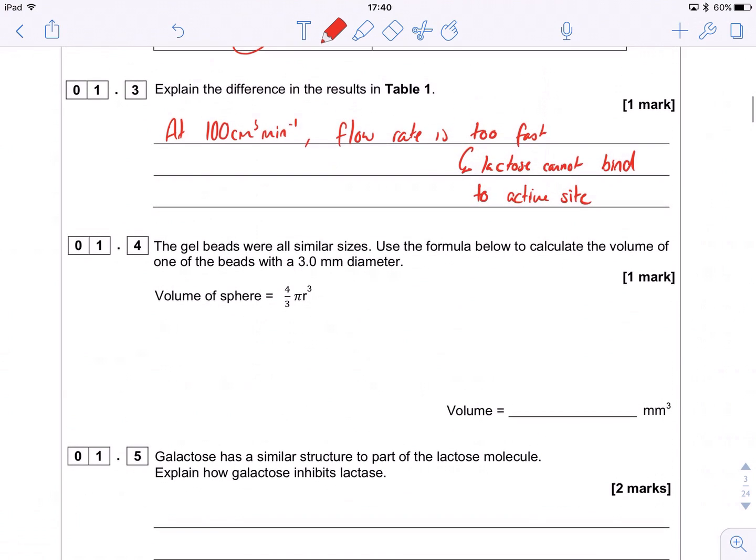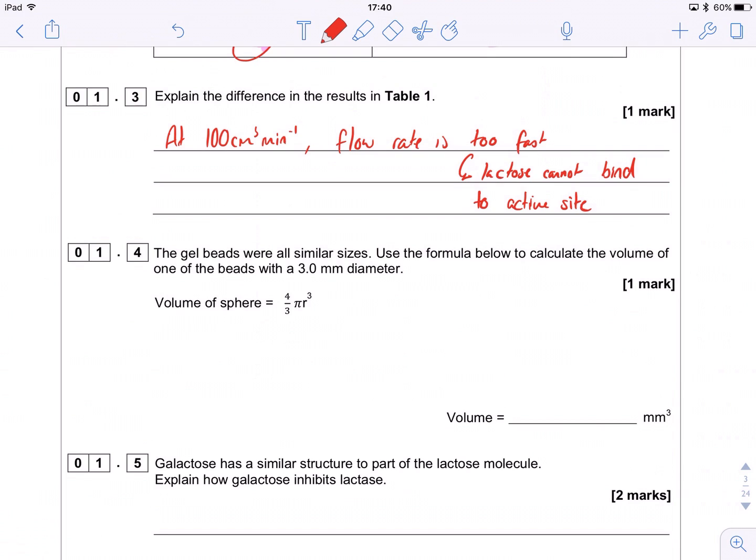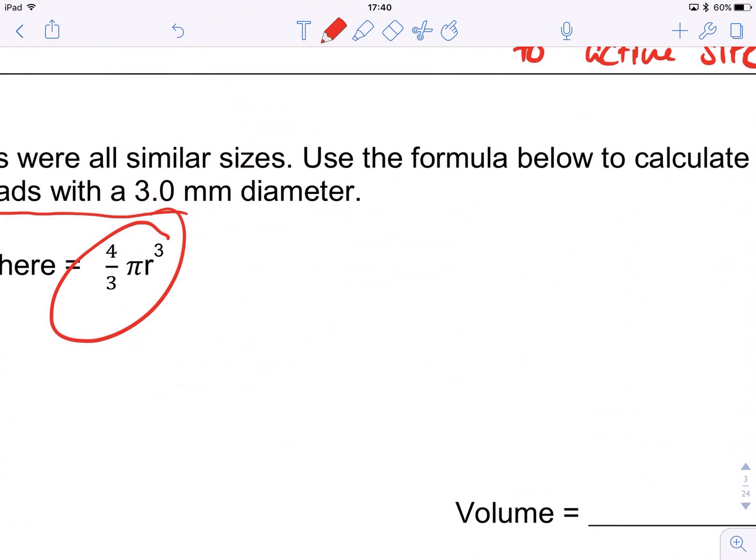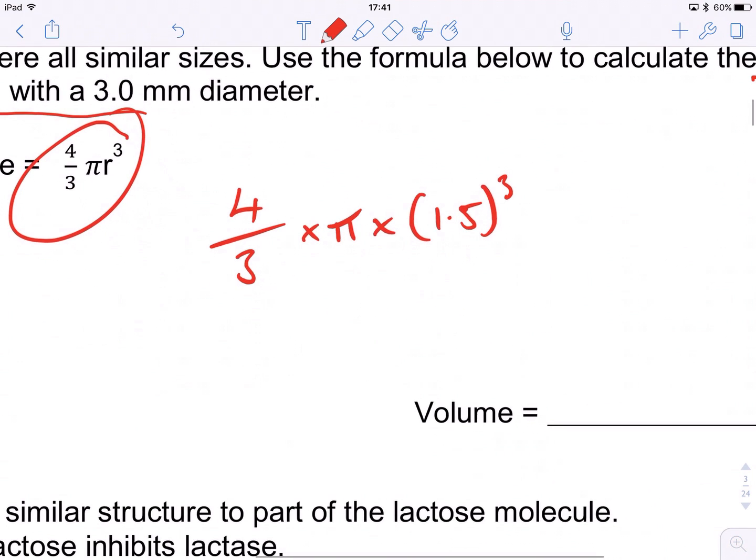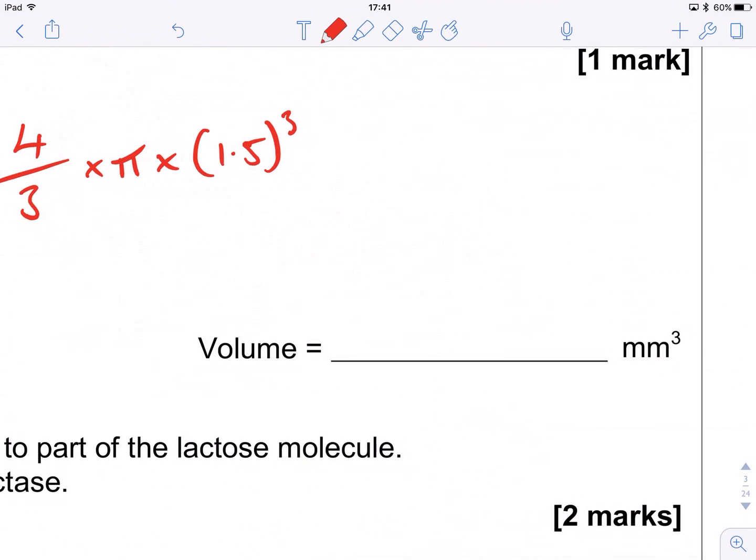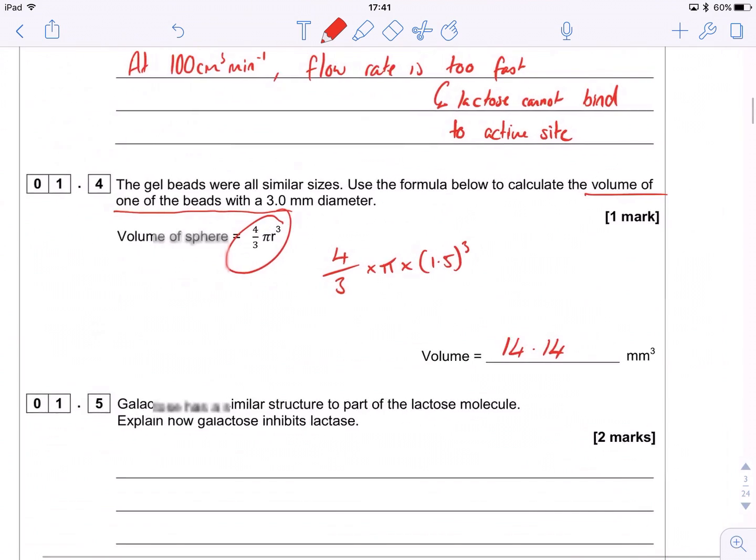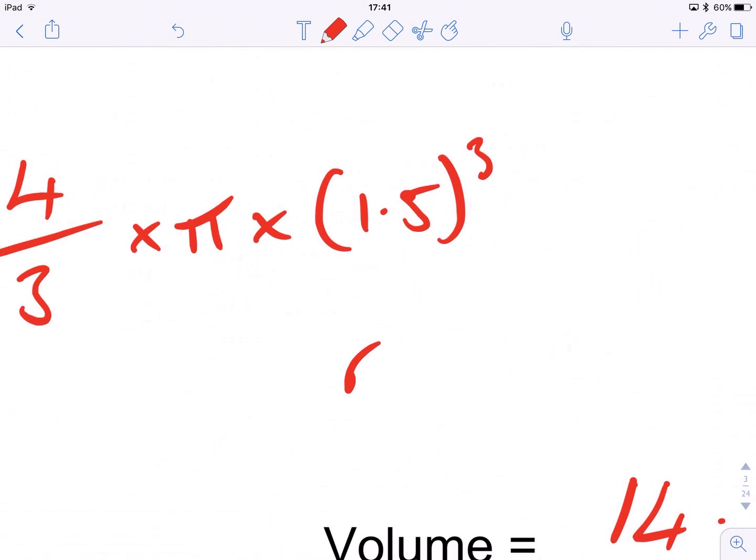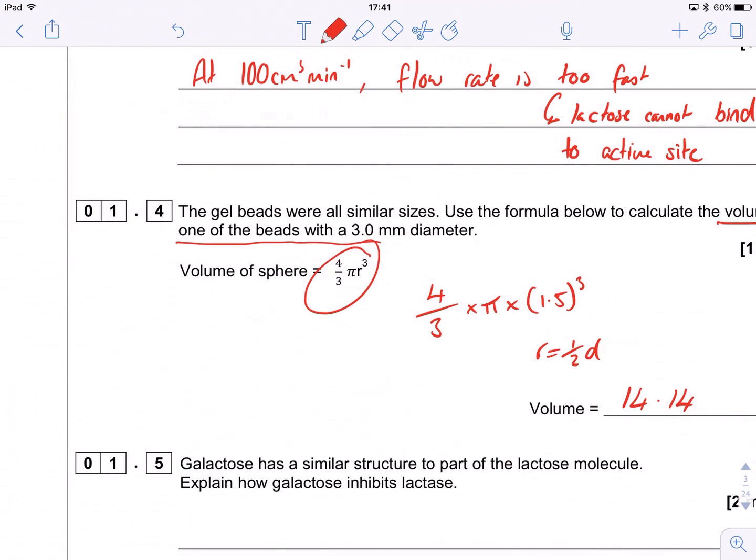Then we've got something that might scare a few people. Got a bit of maths kicking around there. The gel beads are all similar size. Use the formula below to calculate the volume of one of the gel beads, the three millimetre diameter. And they give you the equation for a volume of a sphere. So all you've got to do is be confident with your calculator bashing. So what you want to do, smash this into your calculator. R cubed, R is the radius is half the diameter. So that's the place to watch out. And that's where people will fall down on this. So your equation should be four thirds times pi times 1.5 cubed. And if you bash that through a calculator, you should come out with 14.14 millimetres cubed. So just watch that radius equals half of diameter. Just watch that. Because that's where people might get stuck.